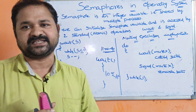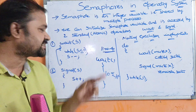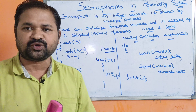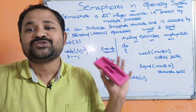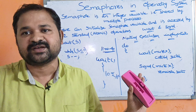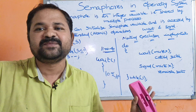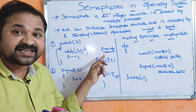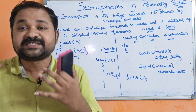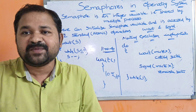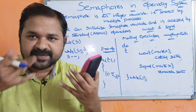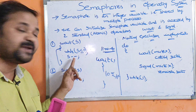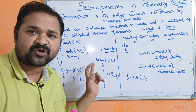So in the wait operation there are two conditions. First, if S is less than or equal to 0, then do nothing — there is no need to perform any operation, and that process will be in a sleeping or blocked state. Otherwise, if S is greater than 0, meaning the semaphore variable contains a positive number such as 1, 2, 3, or 4, then we decrement the value of the semaphore by 1.